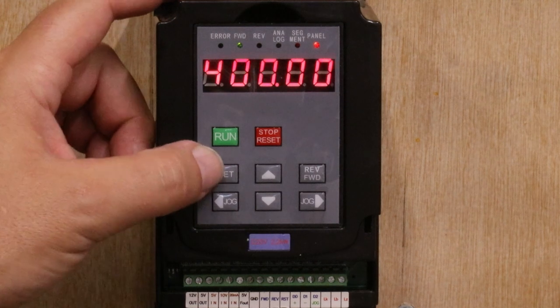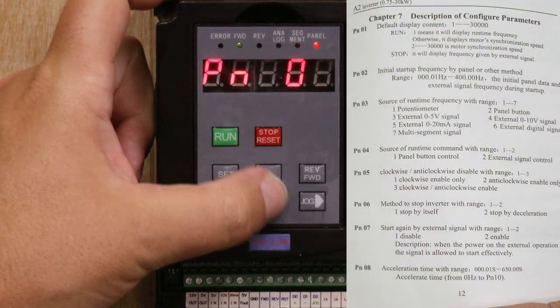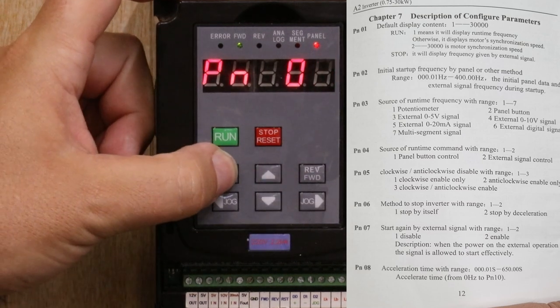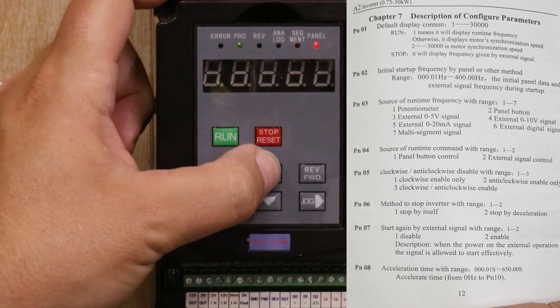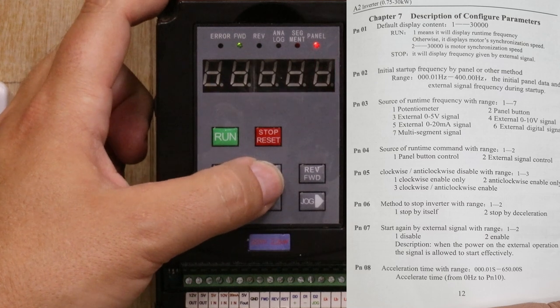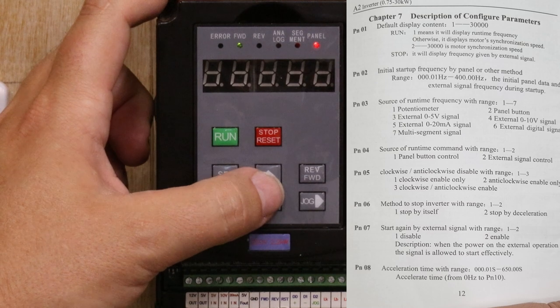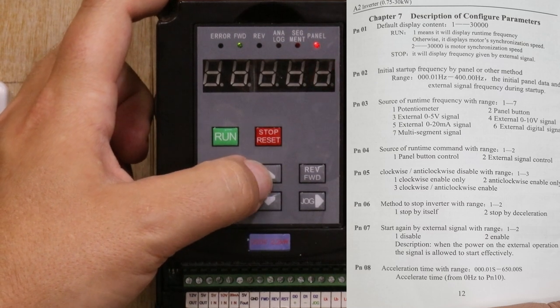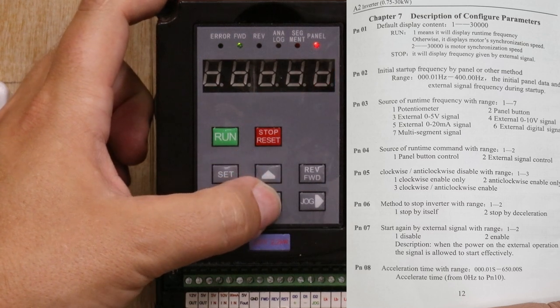So the first thing we're going to do is go into the menu system and we're going to go to PNO3 and click set. Now there are a couple of different options in this. Number two is telling it to pick the signal up from the panel. Number three is telling it to pick the signal up from five volt. Number four is 10 volt, and there are a couple of other options as well after this.